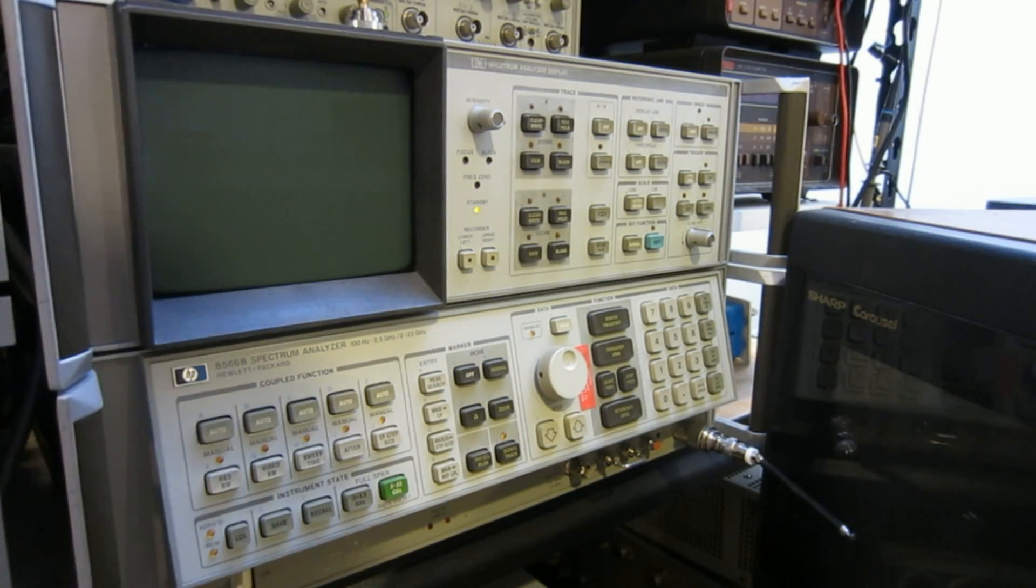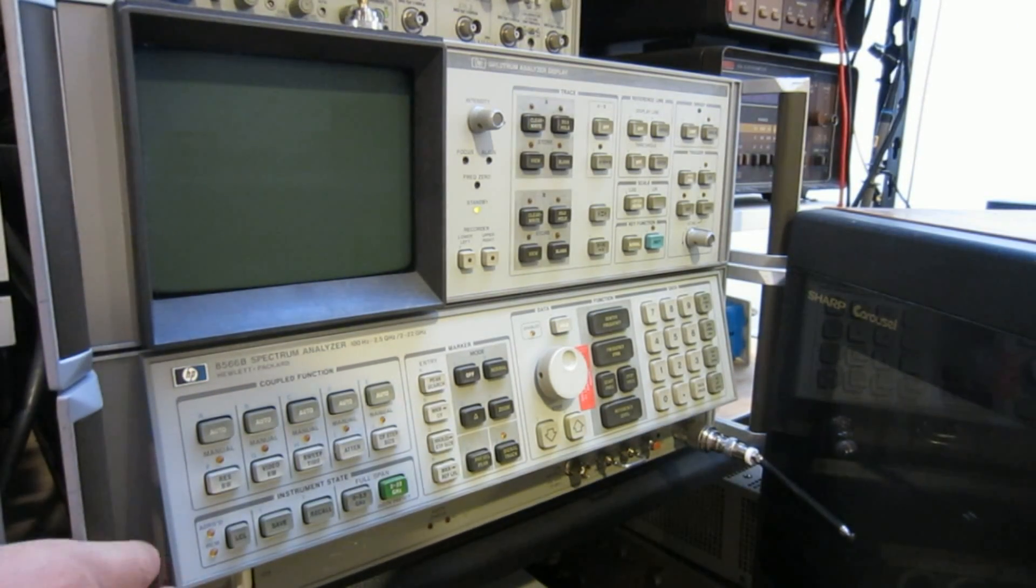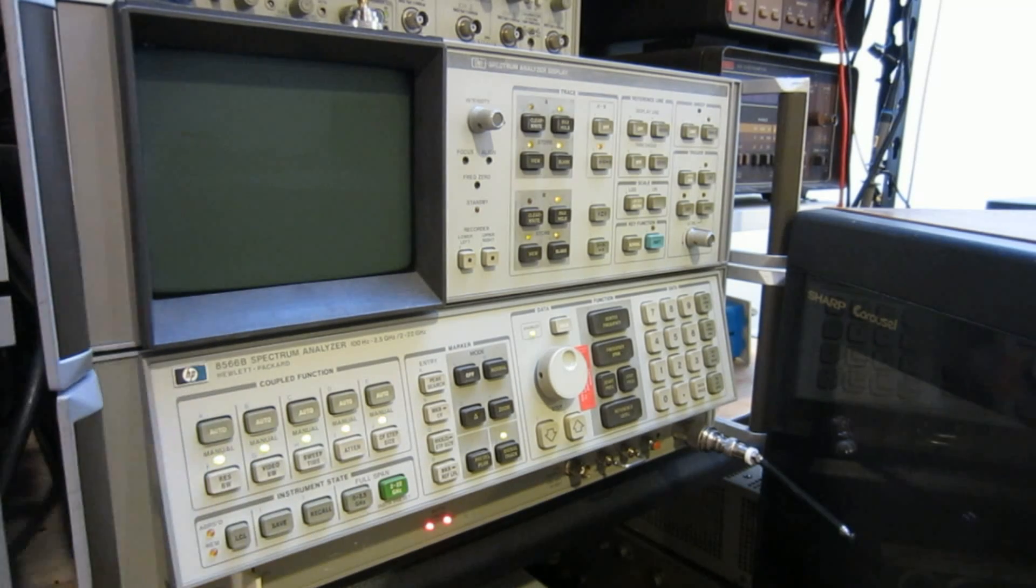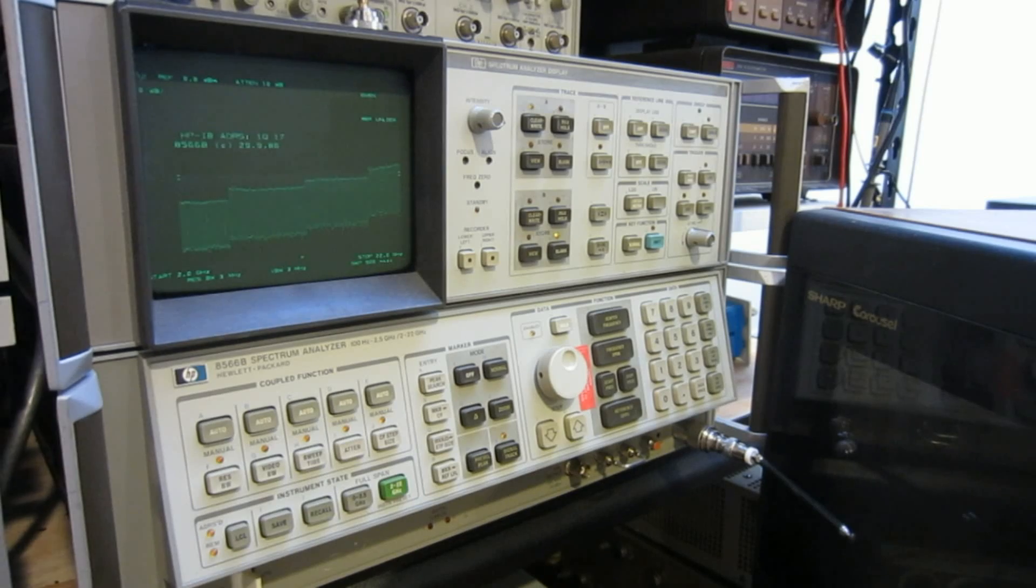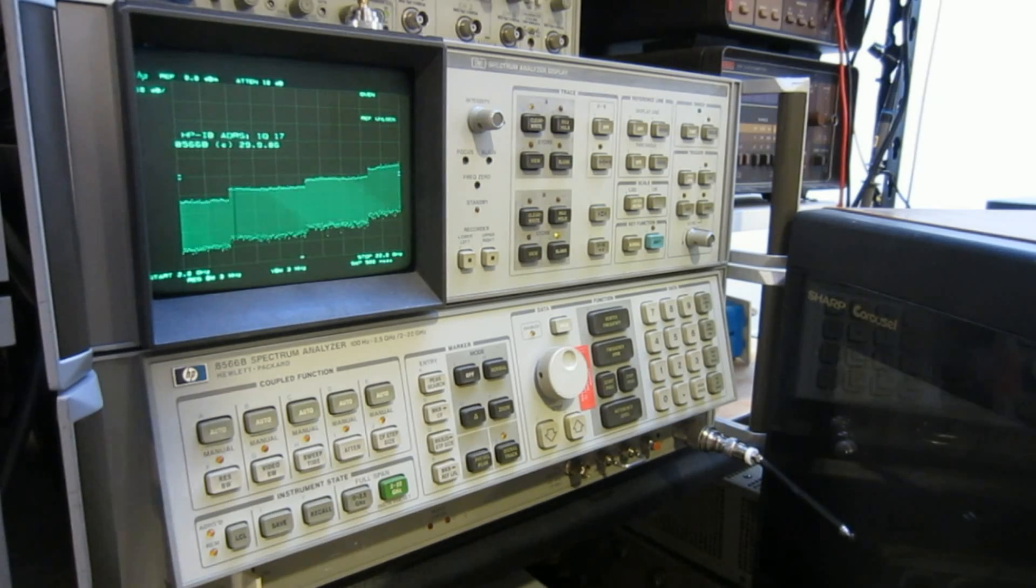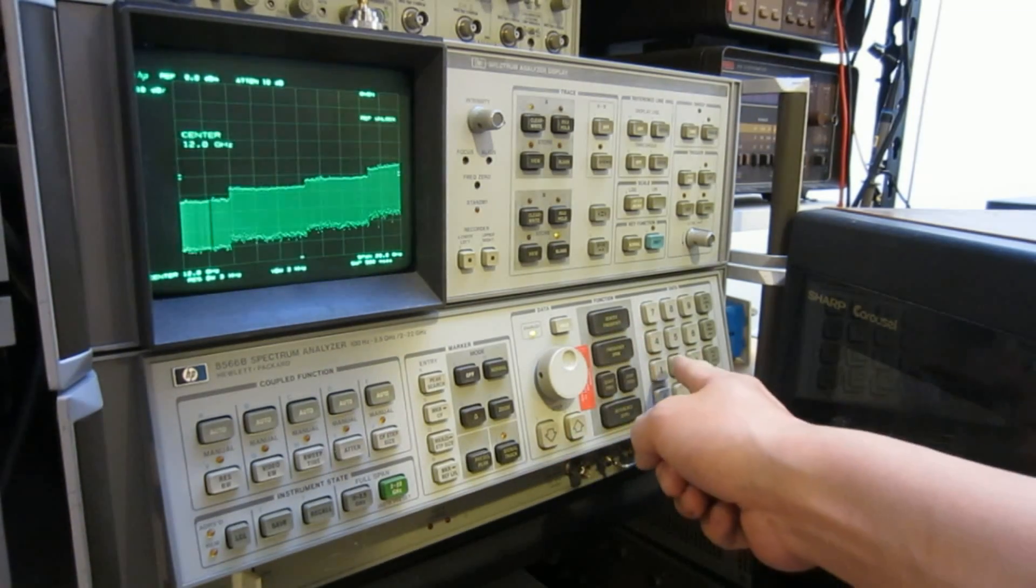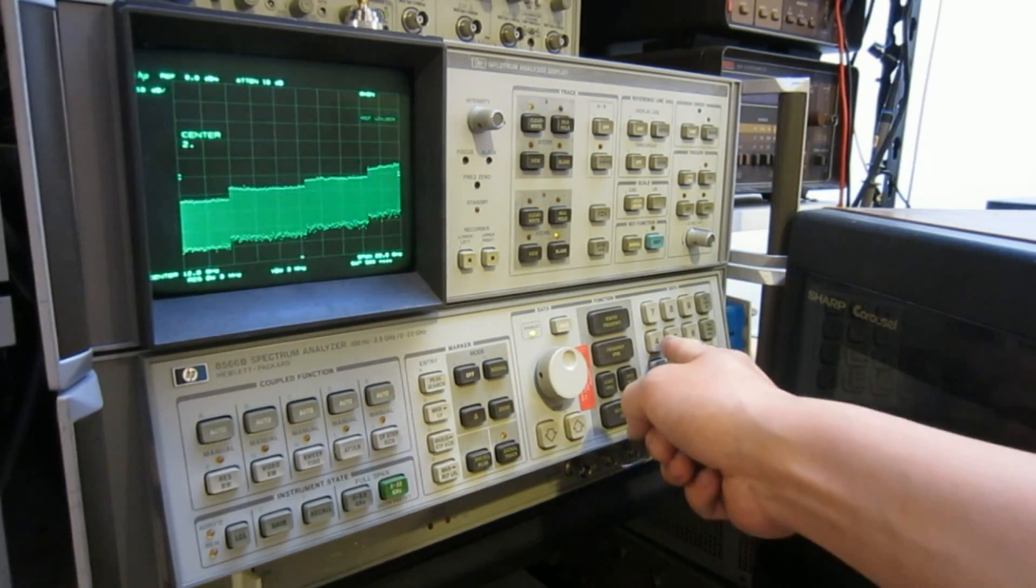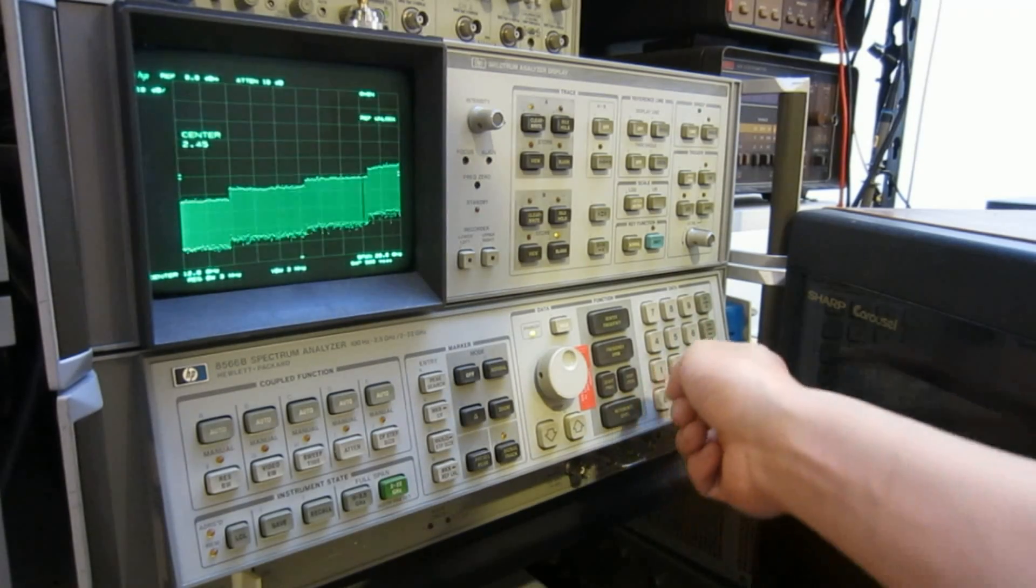So without further waiting, let's turn on the spectrum analyzer. And for commercial and residential microwaves, the modern ones are all operating at around 2.45 gigahertz. So we want to set the central frequency to 2.45 gigahertz.